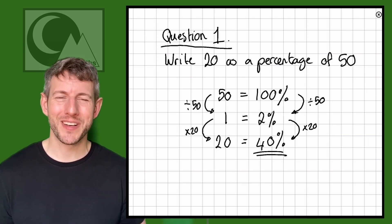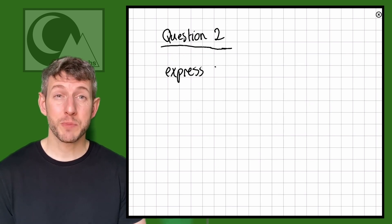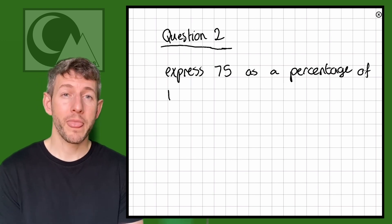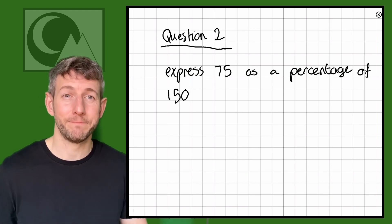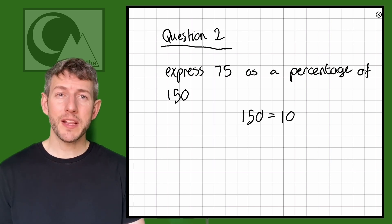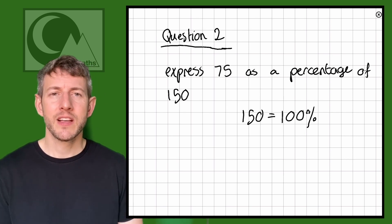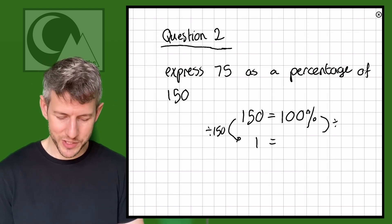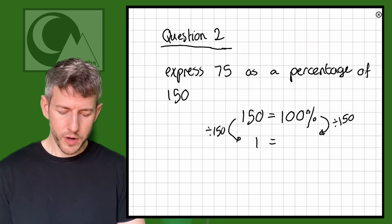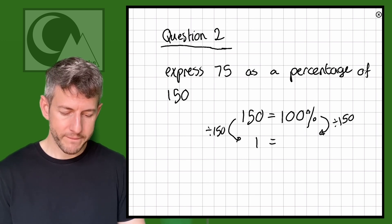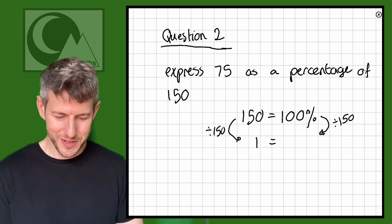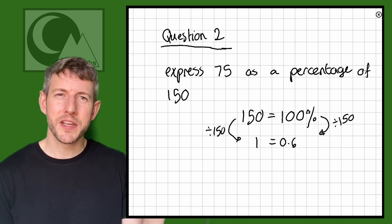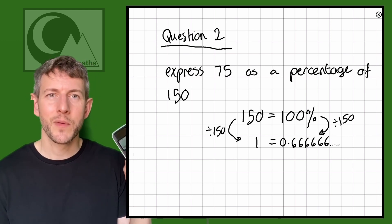Okay let's have a look at question 2. Here we have express 75 as a percentage of 150. So 150 equals our 100%. So we divide this by 150. So 100% divided by 150. I'm going to use the calculator for this question. So 100 divided by 150 equals 2 thirds, which is also equal to 0.6 recurring. That means 0.66666 repeating.